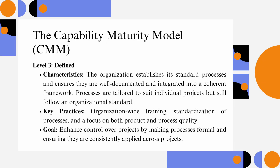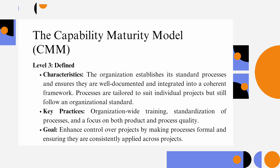Level 3 – Defined: The organization establishes its standard processes and ensures they are well documented and integrated into a coherent framework. Processes are tailored to suit individual projects but still follow an organizational standard. Key practices include organization-wide training, standardization of processes, and a focus on both product and process quality. The goal is to enhance control over projects by making processes formal and consistently applied.